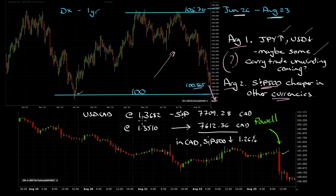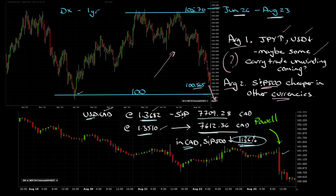Let's take the changing currency: one week ago the Canadian dollar was sitting at 1.3682; now it's 1.3510. If we take the closing price of the S&P 500 on Friday — with no currency change it would have cost C$7,709, but because of the currency change it now costs C$7,612. In Canadian dollars, the S&P 500 is actually 1.26% cheaper. Even though it went up in price, week-over-week for a Canadian there was basically no change in price because the Canadian dollar increased in value.